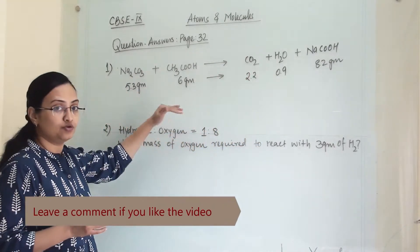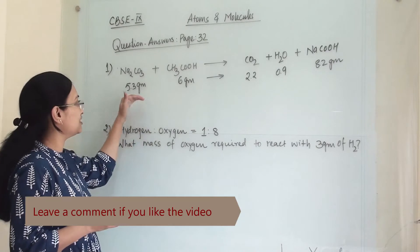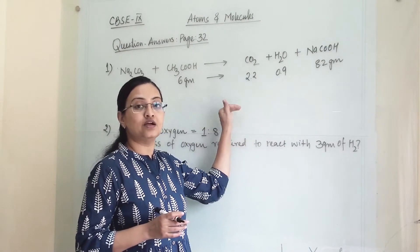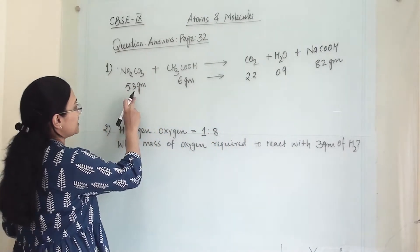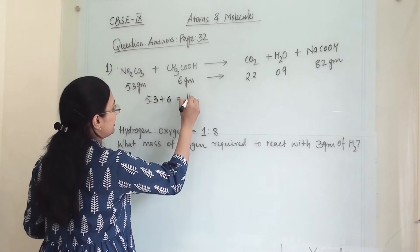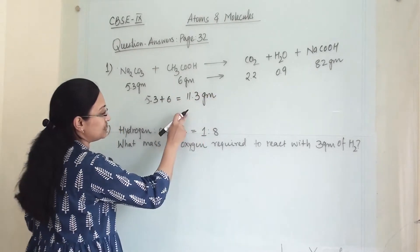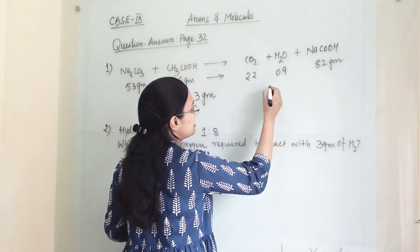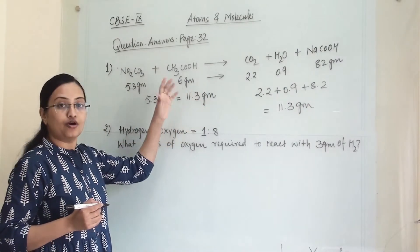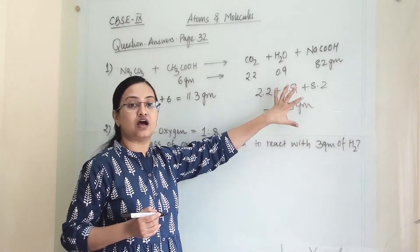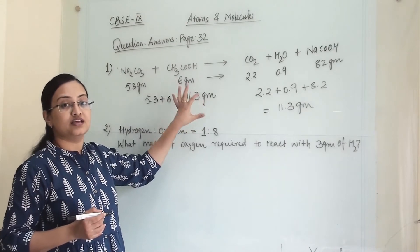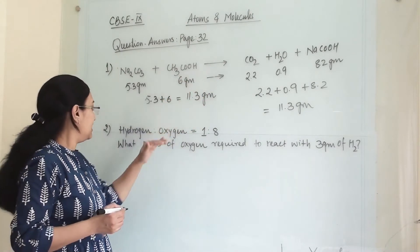To prove the law of conservation of mass, we need to add the mass of reactants and the mass of products and see that both are equal. Here, 5.3 plus 6 gives us 11.3 gram total for reactants. Adding the products: 2.2 plus 0.9 plus 8.2 also gives 11.3 gram. The weight of reactants and weight of products are equal, so the law of conservation of mass is fully confirmed for this reaction.